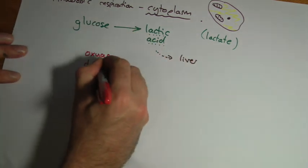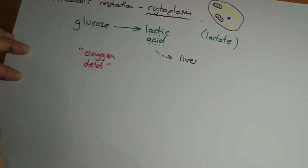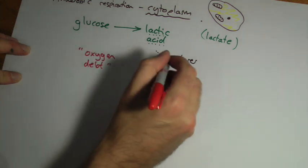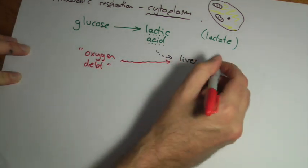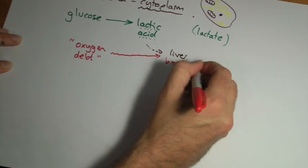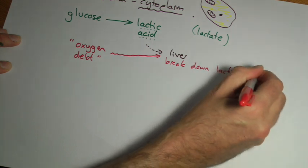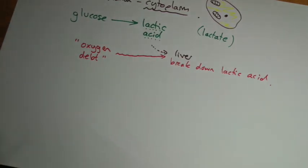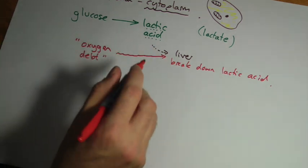And they say this is to repay the oxygen debt. What it's suggesting is, this oxygen is used by the liver to break the lactic acid down. Now the reason I put it in inverted commas, it doesn't really do that, it sort of does but not really. It's in your book.